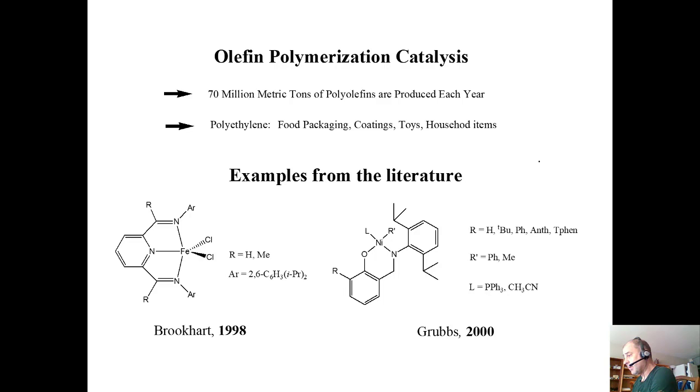There are also late transition metals. Brookhart and Grubbs have designed ligands that host late or middle transition metals like iron that are catalytically active. This is a big industry - 70 million metric tons of polyolefins are produced each year. Those are polypropylene, polyethylene, plastic bags, Tupperware, all those plastic containers. They're always looking to improve that and make it more environmentally friendly.